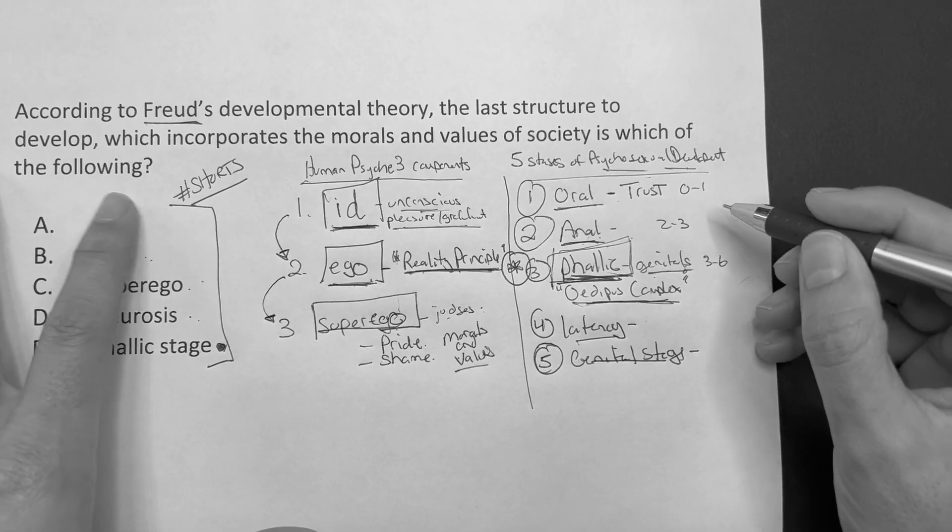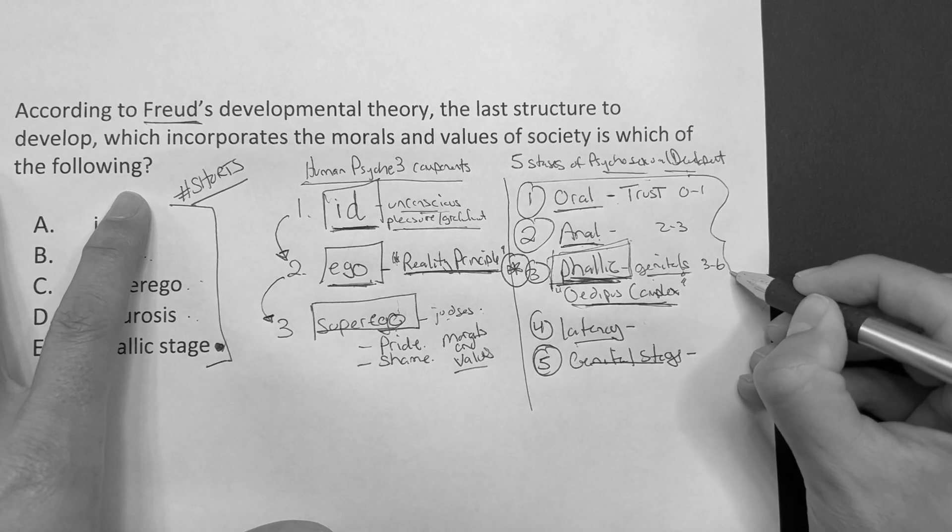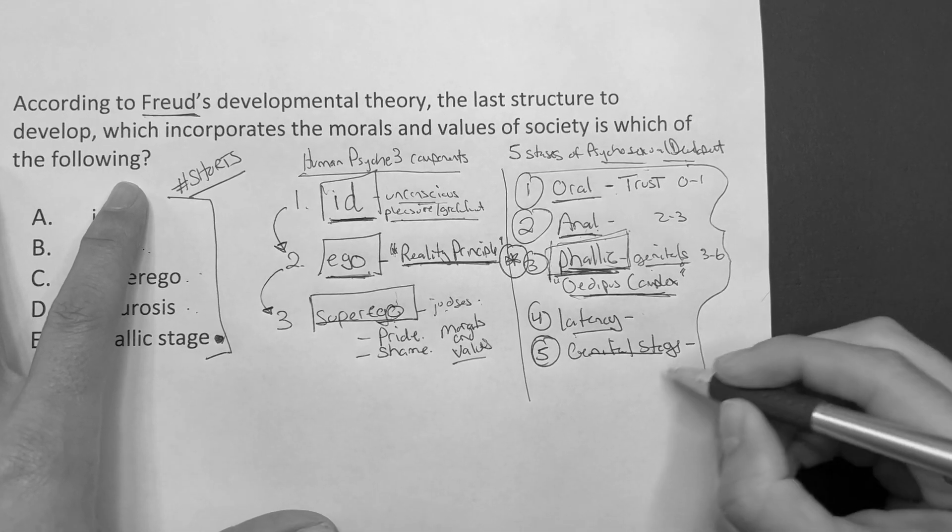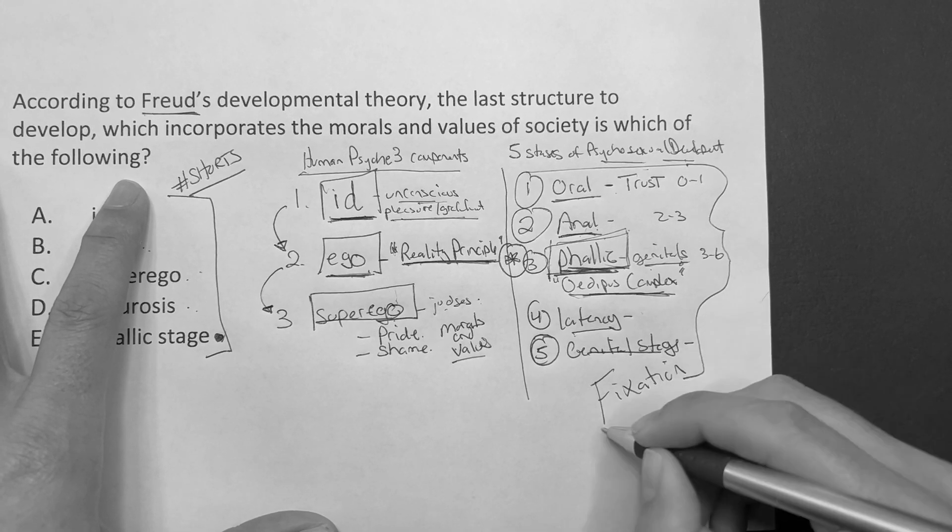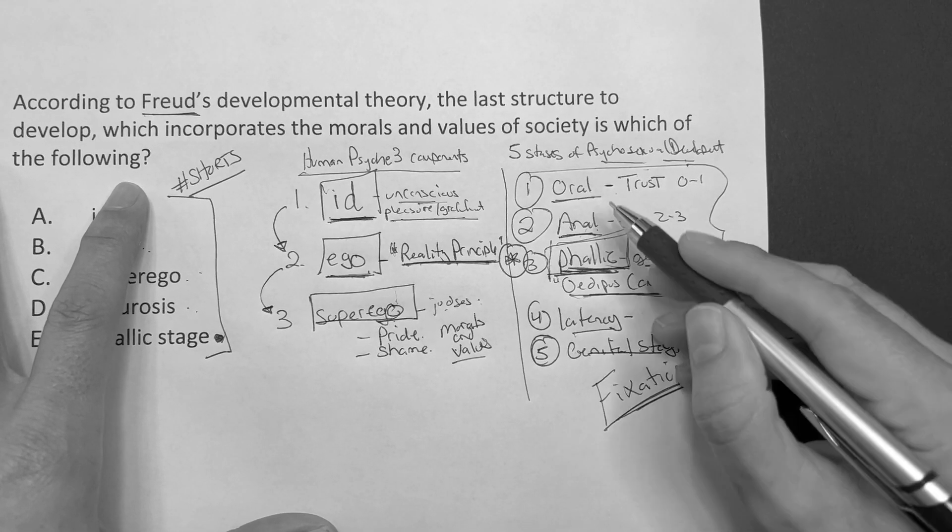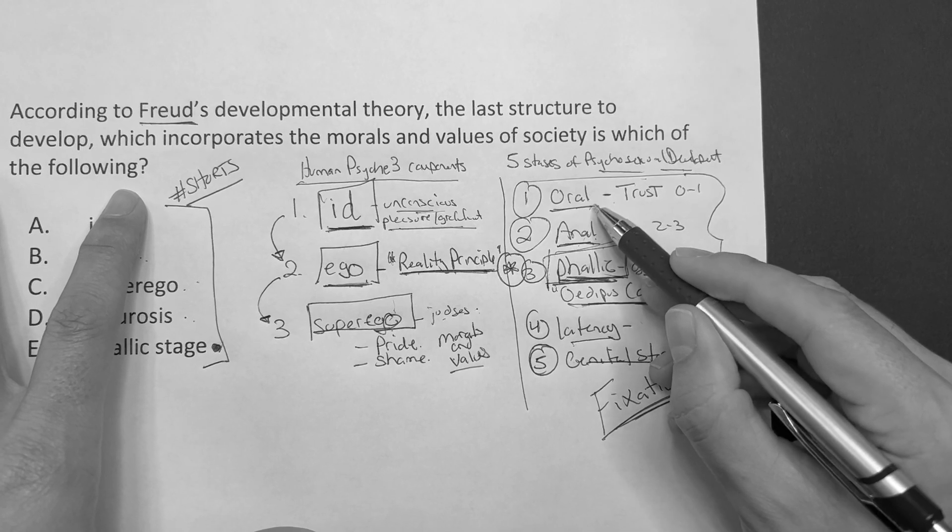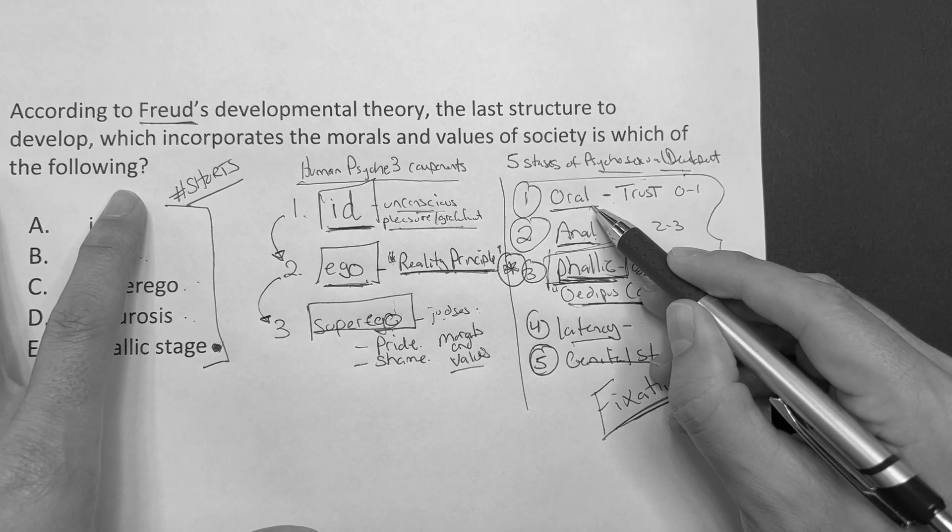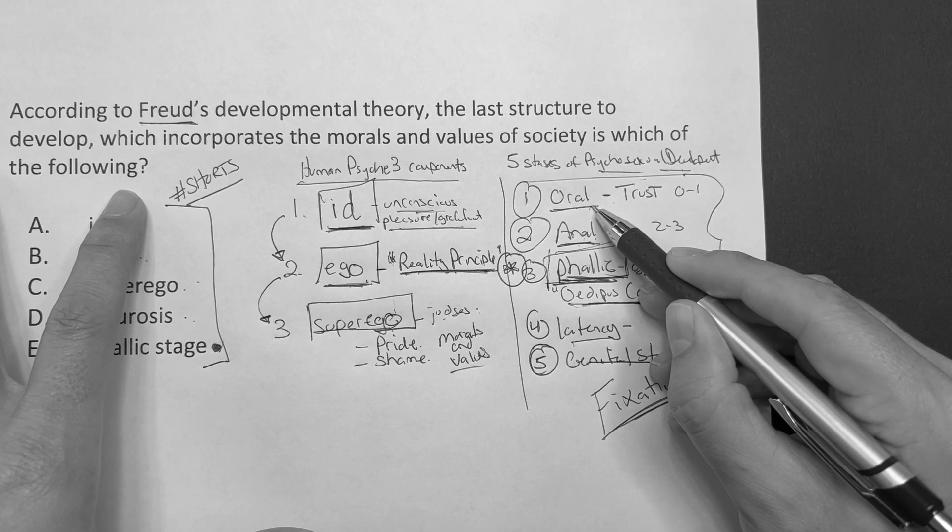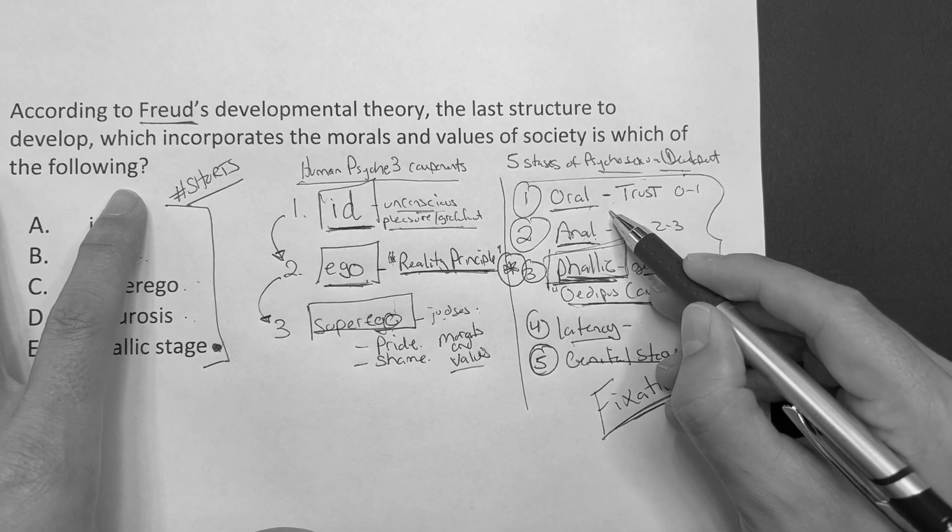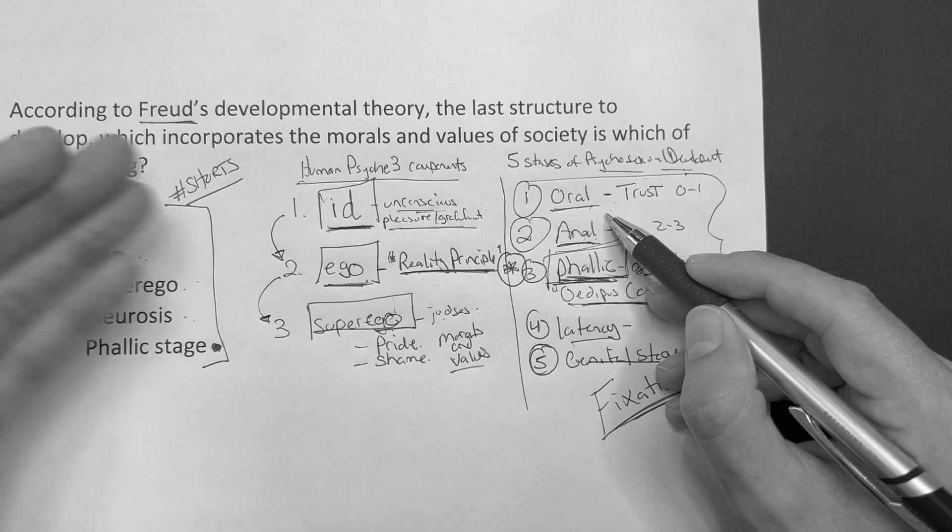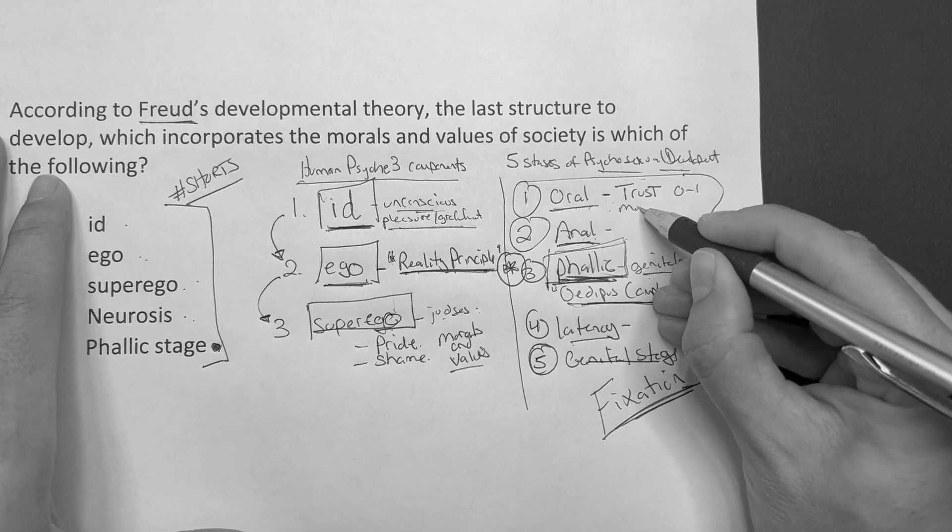Now Freud says, look, if you don't get through this stuff, if you don't get through these phase stages healthy, you can become fixated. There's a fixation that could occur within these. Like if you're stuck in the oral phase, this could lead to addictions such as alcohol, smoking, overeating, nail biting, stuff to do with things that you're going to put in your mouth.